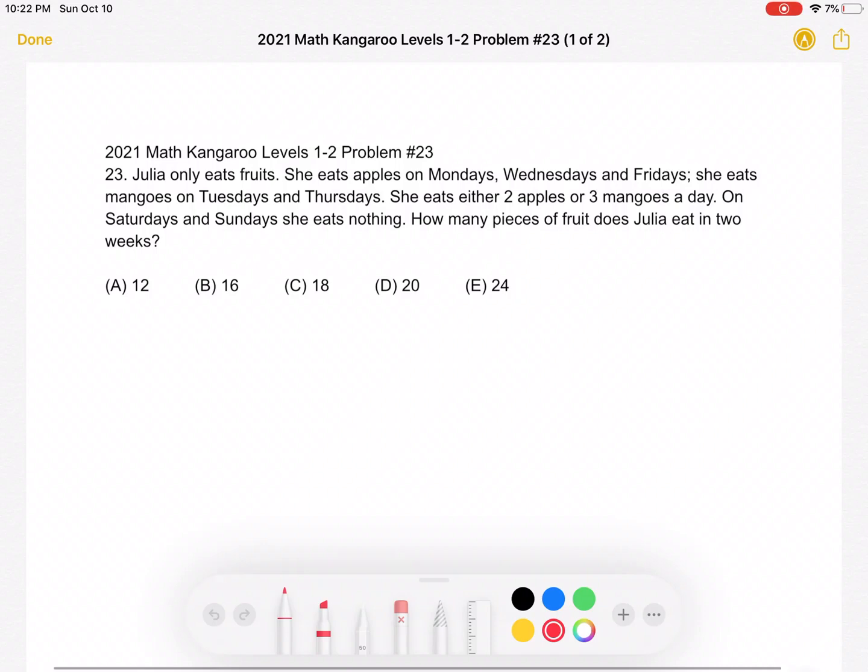This is the 2021 Math Kangaroo Levels 1-2, Problem Number 23. Julia only eats fruits. She eats apples on Mondays, Wednesdays, and Fridays. She eats mangoes on Tuesdays and Thursdays. She eats either two apples or three mangoes a day. On Saturdays and Sundays, she eats nothing. How many pieces of fruit does Julia eat in two weeks?